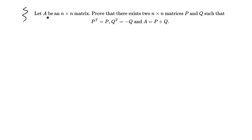It says: let A be an n by n matrix, so a square matrix. Prove that there exist two n by n matrices P and Q such that P transpose is equal to P, Q transpose is equal to negative Q, and A is equal to P plus Q.